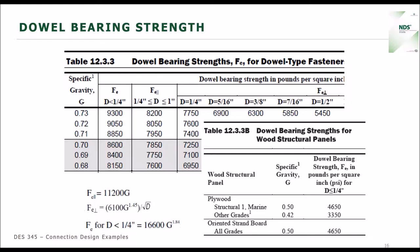We talked about withdrawal where the fastener was loaded parallel to its length. Now let's talk about lateral loading or shear loading — where we are loading the fastener perpendicular to its length. One of the important properties for calculating the shear capacity is going to be the dowel bearing strength. For solid sawn lumber, the dowel bearing strength is listed in Table 12.3.3. For fasteners less than one-quarter inch in diameter, FE does not vary with fastener size — it's based solely on the equation 16,600 times G to the 1.84 power.